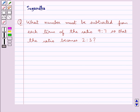Hello and welcome to the session. In this session we discuss the following question which says what number must be subtracted from each term of the ratio 9 is to 7 so that the ratio becomes 2 is to 3.